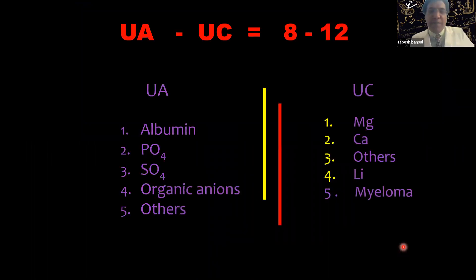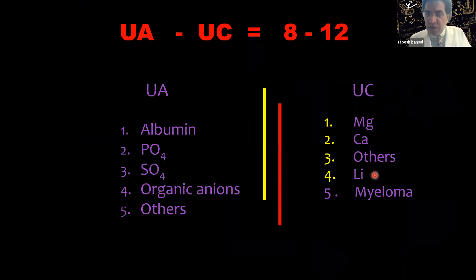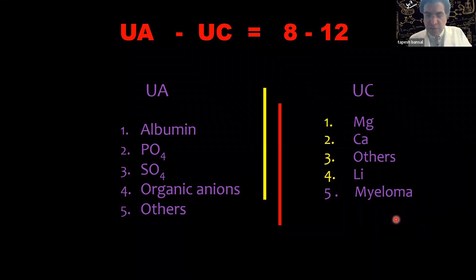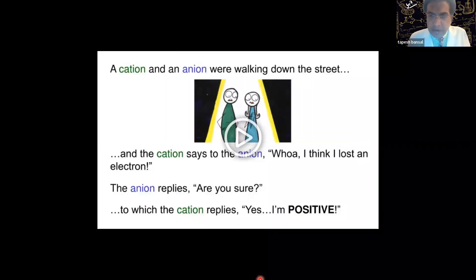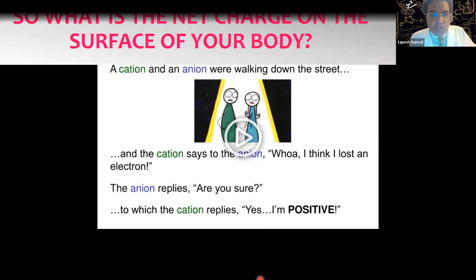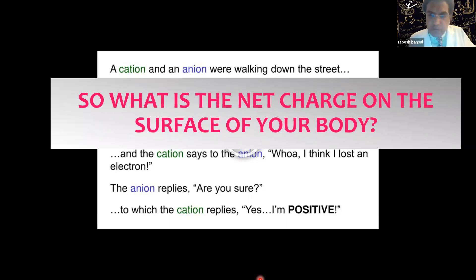The unmeasured cations constitute the anion gap of 8 to 12. Patients on lithium should be noted — lithium is a cation and contributes to the anion gap. Myeloma proteins are also cations that can have a significant impact on anion gap. Please remember there is no actual anion gap; it is only a concept. The question for you is: what is the net charge on the surface of your body? Think about that as we move on.